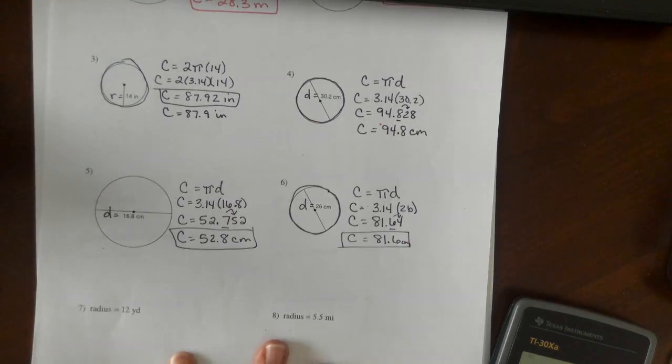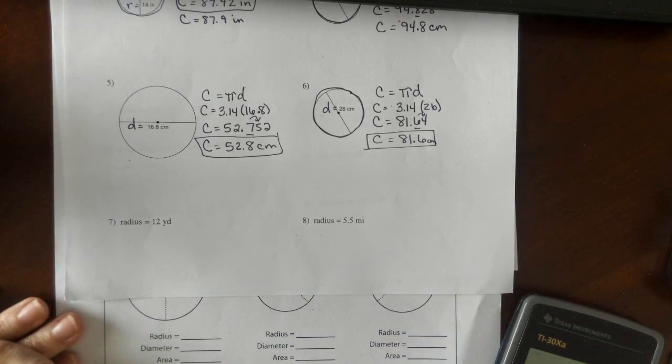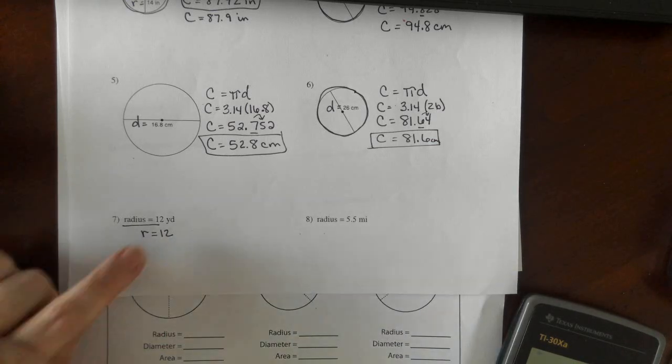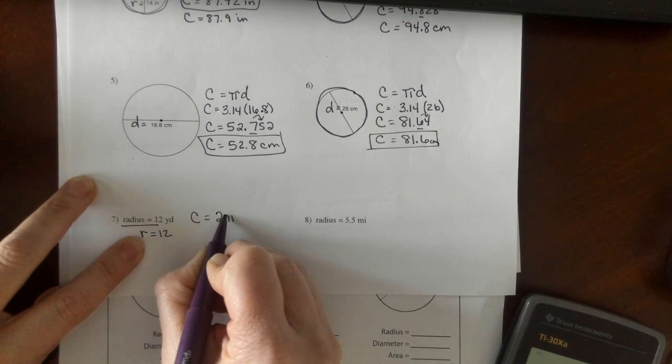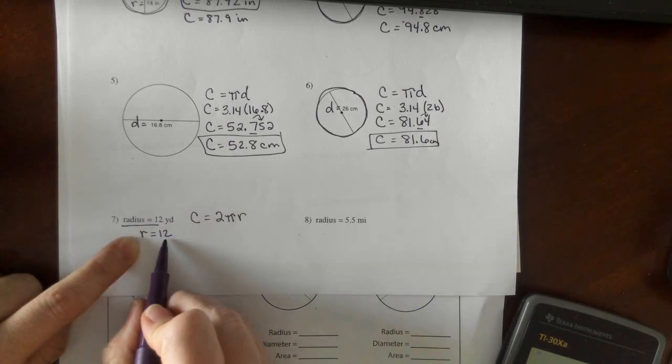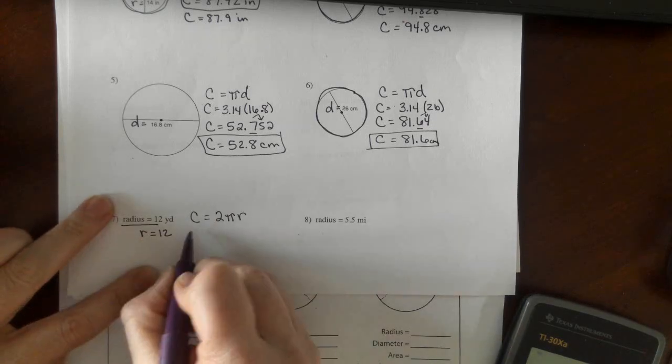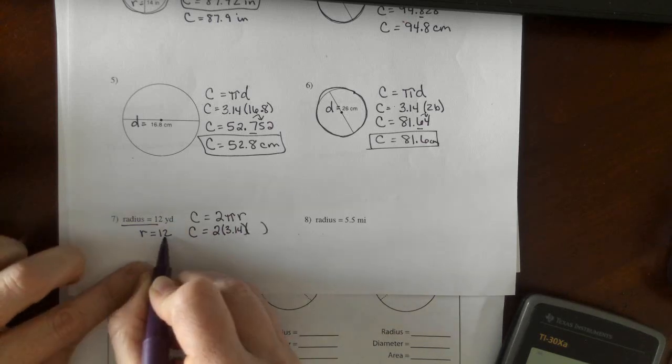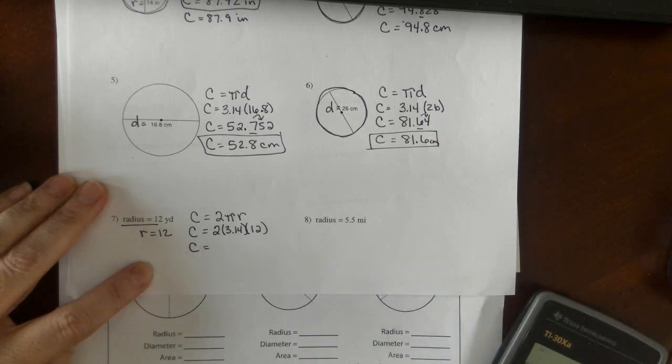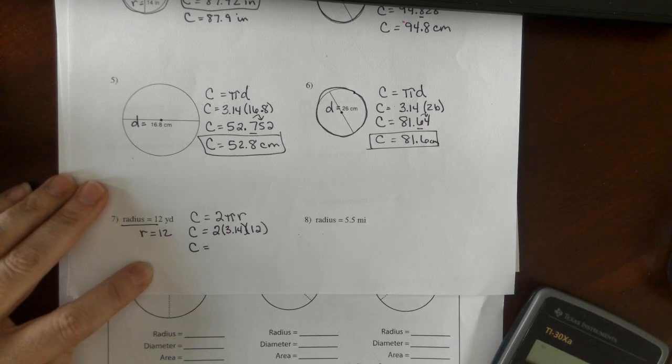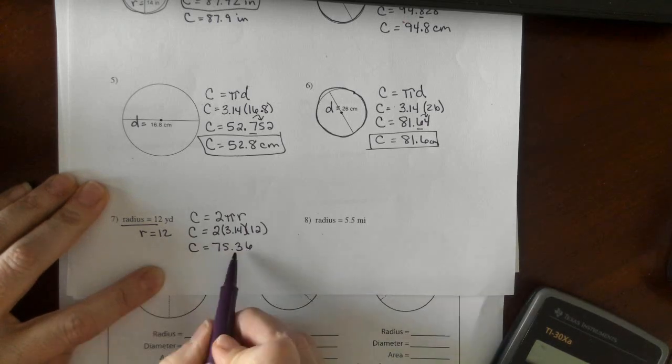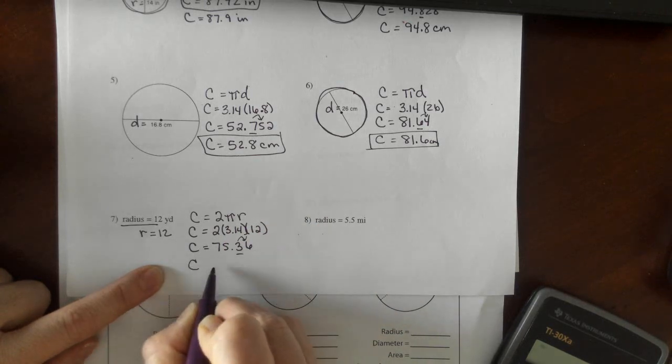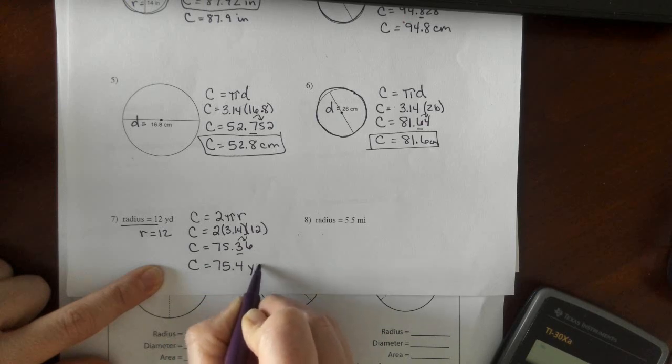Even without a picture, if they give us the known radius or the known diameter, we can still find the circumference. Here it says radius is 12, so I know r is going to equal 12. Since I know my radius, I'm going to use the other formula, 2 times pi times radius, or I could have multiplied this by 2 to get the diameter and use my other formula. Substitute the value for pi times the radius. 2 times 3.14 times 12, 75 and 36 hundredths. Rounding to the tenths place value, we can round it up. The circumference is 75 and 4 tenths yards.